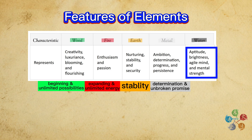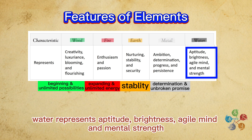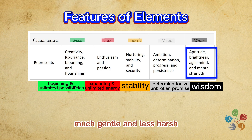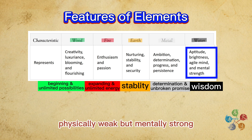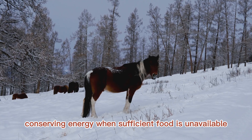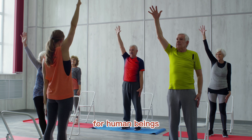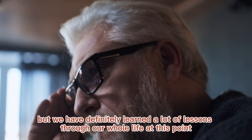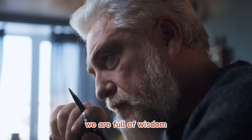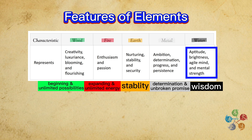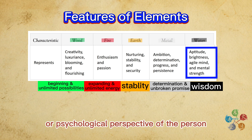Our last element: Water. Water represents aptitude, brightness, agile mind, and mental strength. The element water is like a wise older man — much gentler and less harsh, much more flexible and less rigid, slow but long-standing, physically weak but mentally strong. It is the time of winter, when most creatures go into hibernation, conserving energy when sufficient food is unavailable. For human beings, we will have some physical restrictions when above the age of 70, but we have definitely learned a lot of lessons through our whole life. We are full of wisdom and have understood a lot about the truth of this universe. If you see the element water, the first thing you should think of is anything related to the mind or psychological perspective of the person.